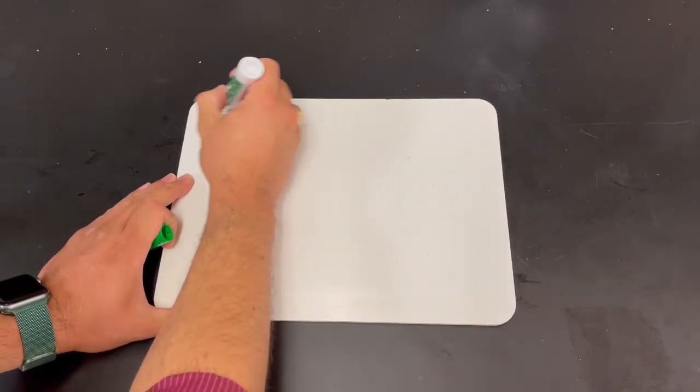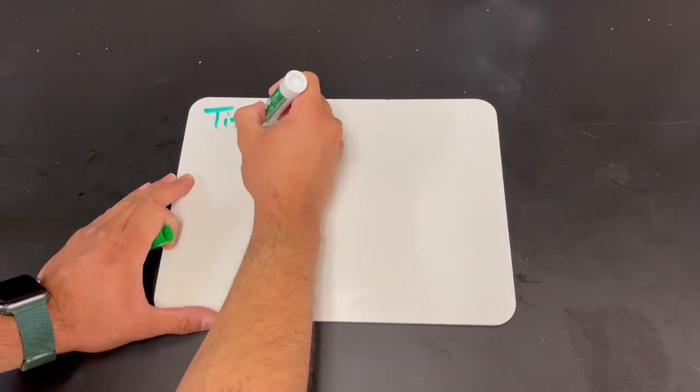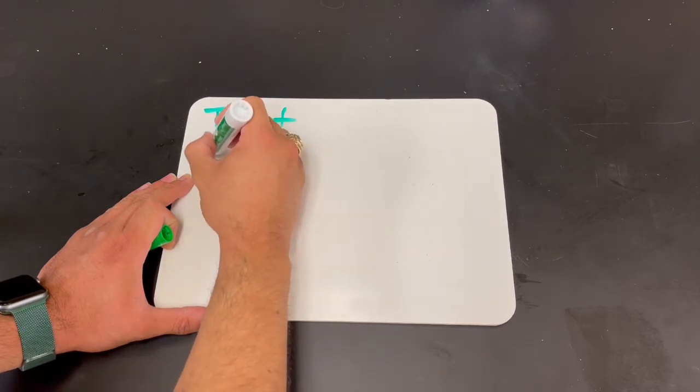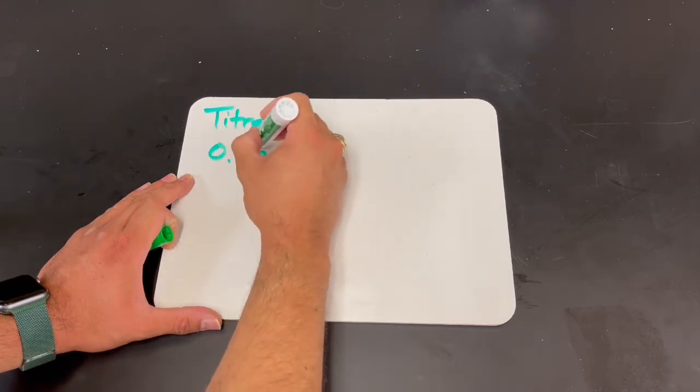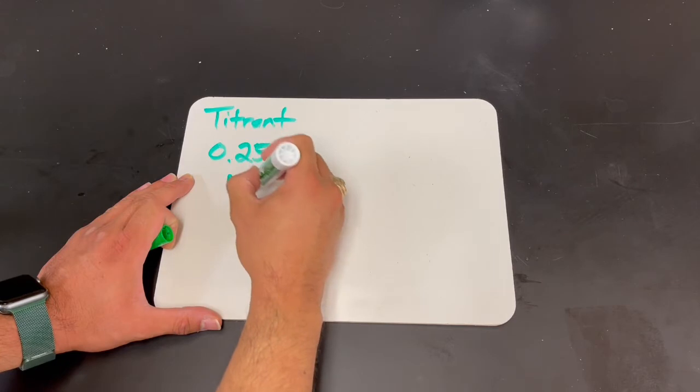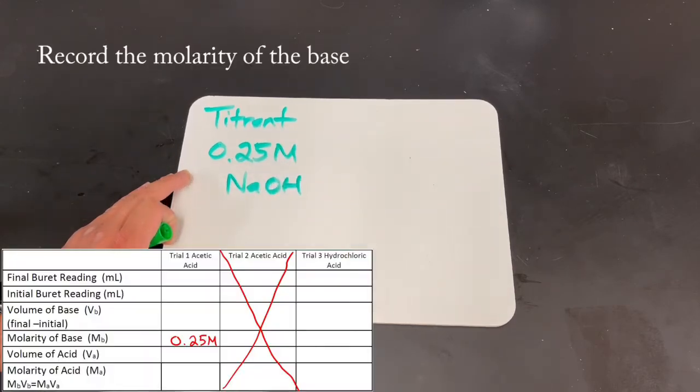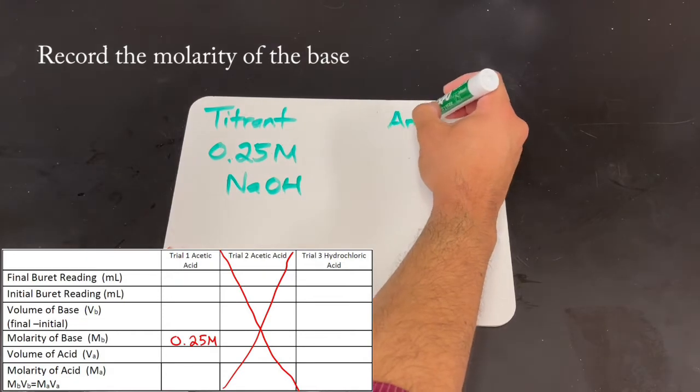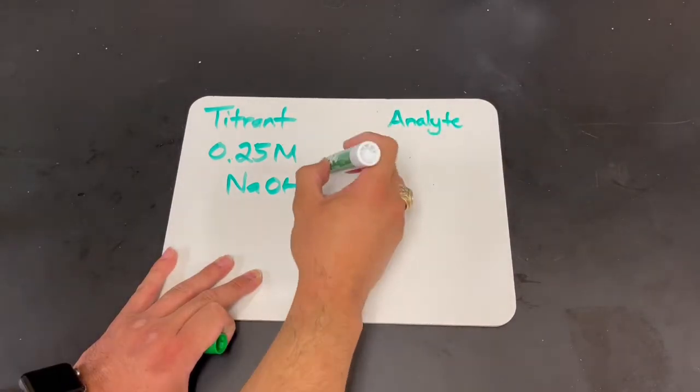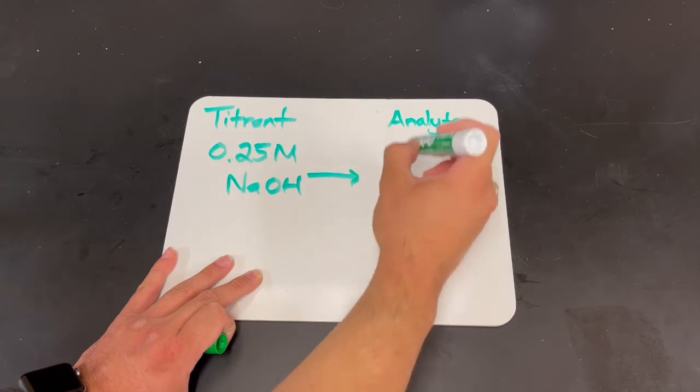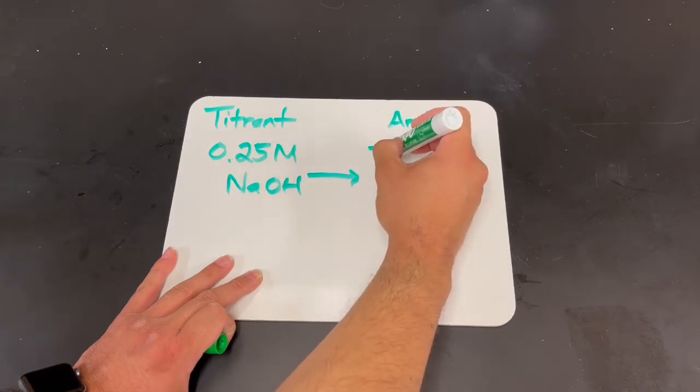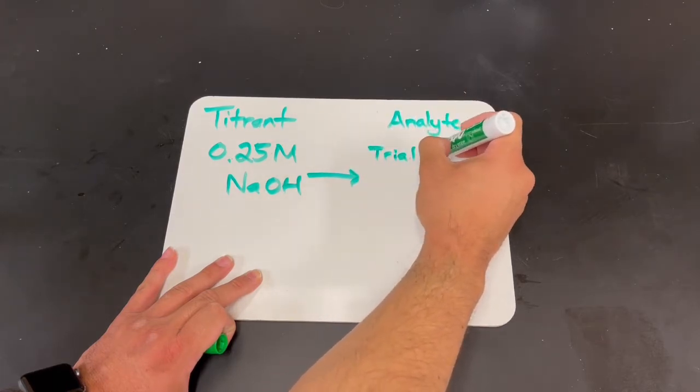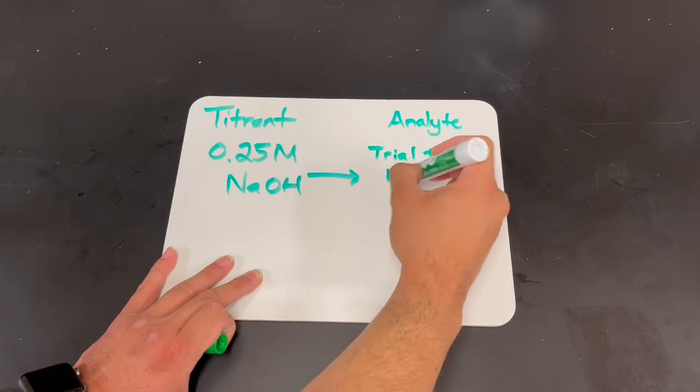So today's titrant would be our 0.25 molar NaOH. The analyte, the one that we don't know the concentration of, we're going to be adding NaOH to, in trial one, acetic acid.